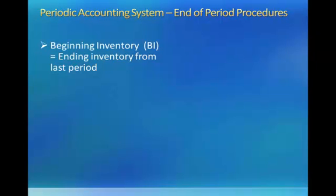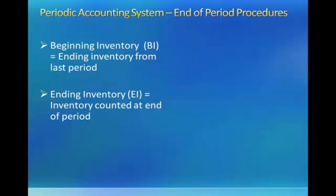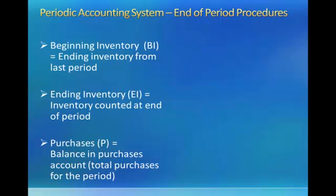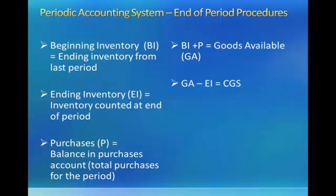Finally, at the end of the period, we need to make some calculations. Beginning Inventory is equal to the ending inventory from the last period. Ending Inventory is equal to the inventory counted at the end of the period, and Purchases will be equal to the balance in the purchases account, which is also equal to the total purchases for the period. If we add Beginning Inventory and Purchases together, we get the goods available for sale. If we subtract our ending inventory from goods available, that gives us cost of goods sold. What we have available minus what we have left over is equal to what we sold.